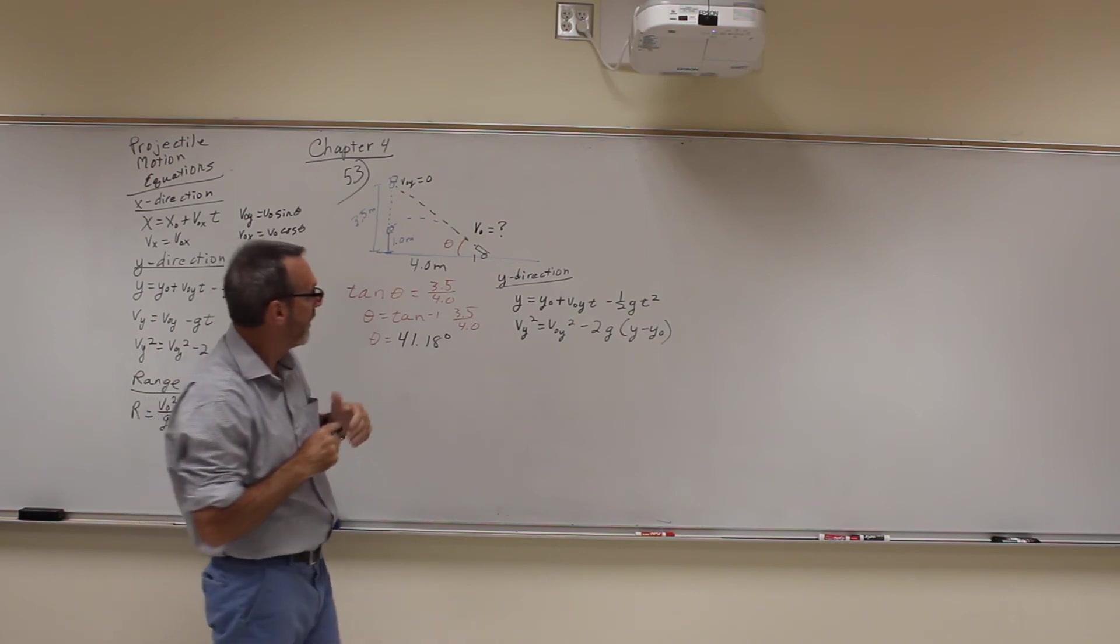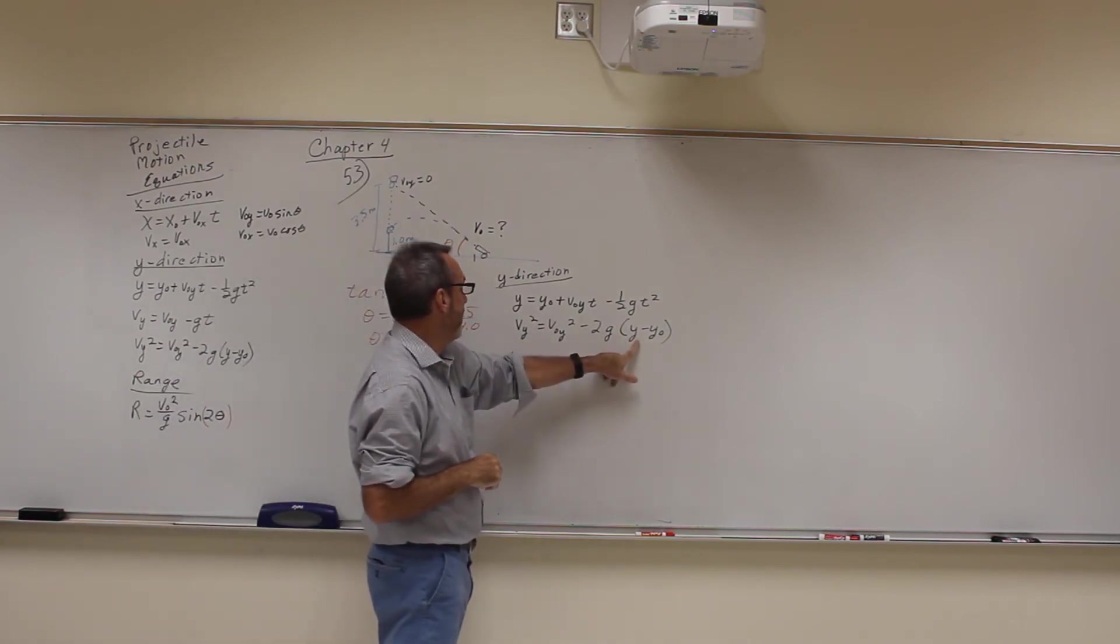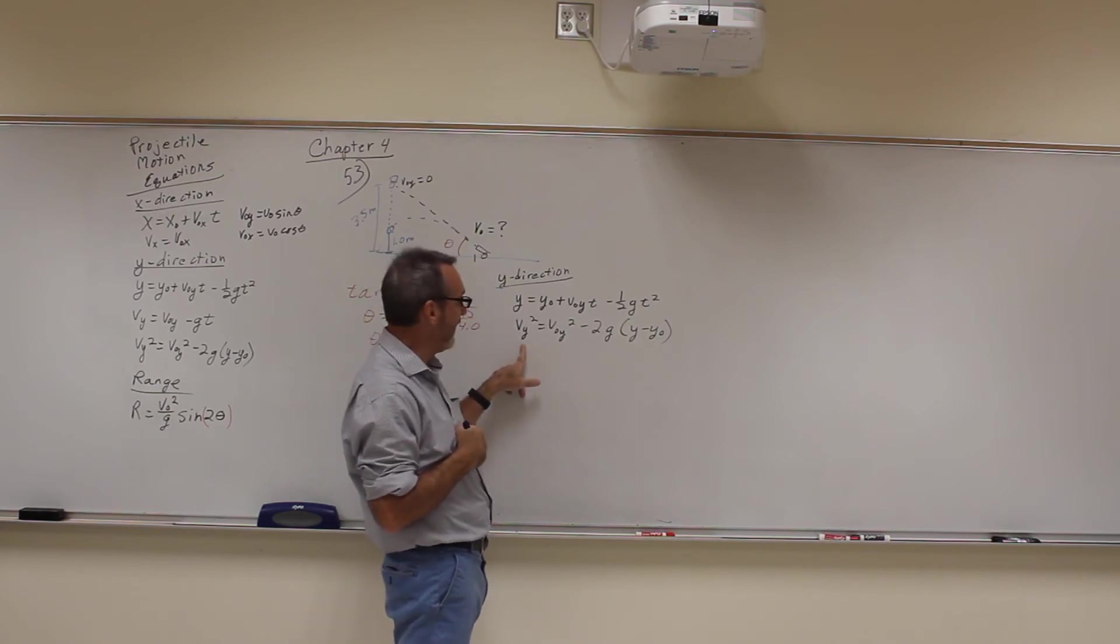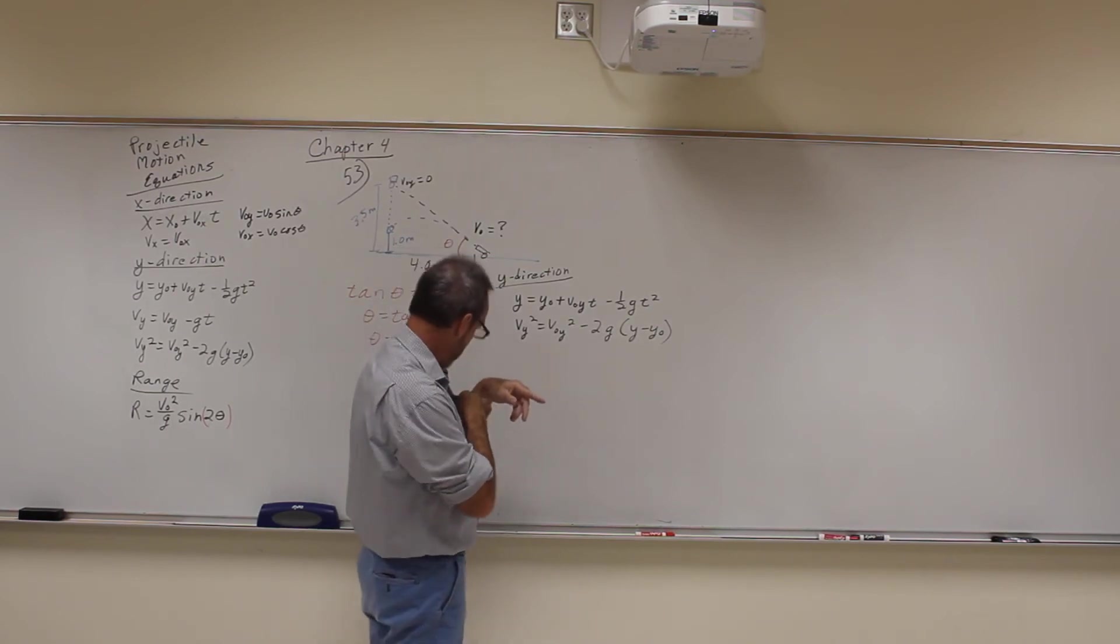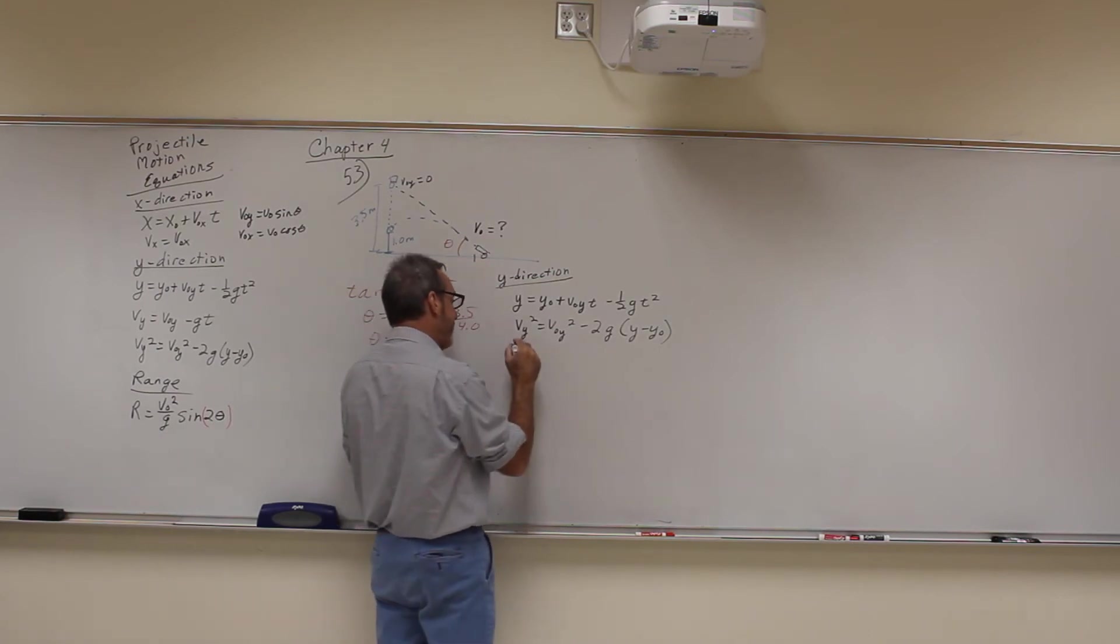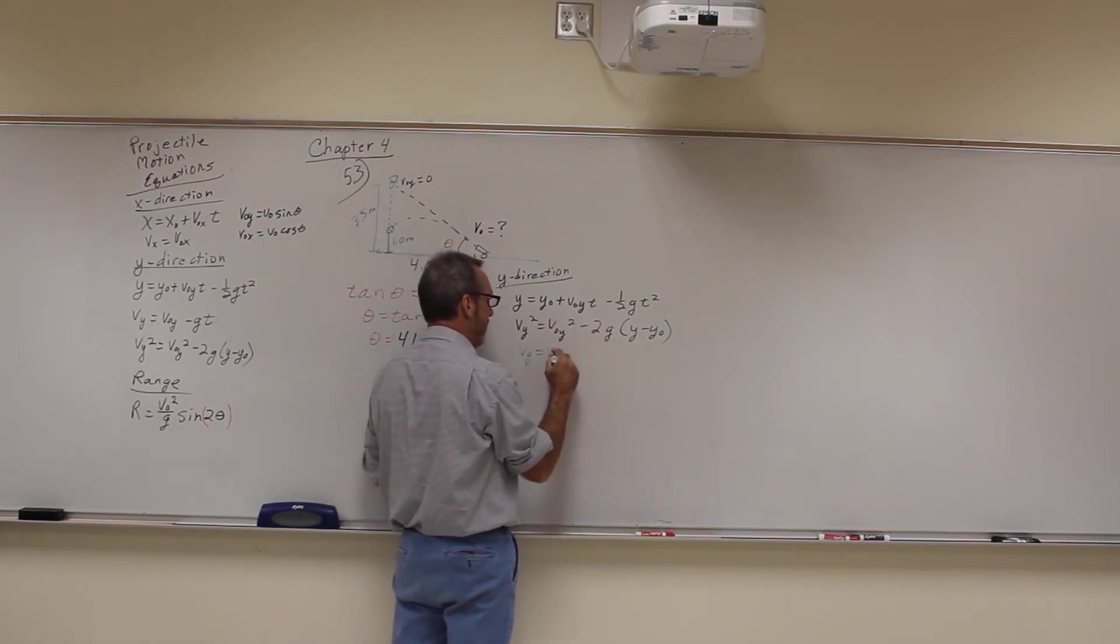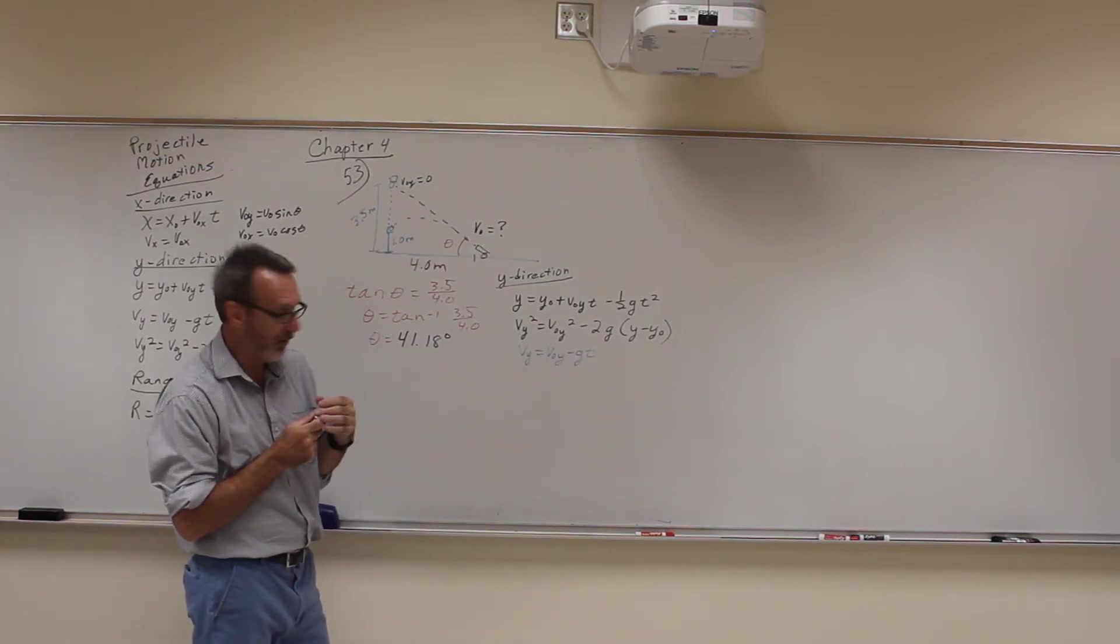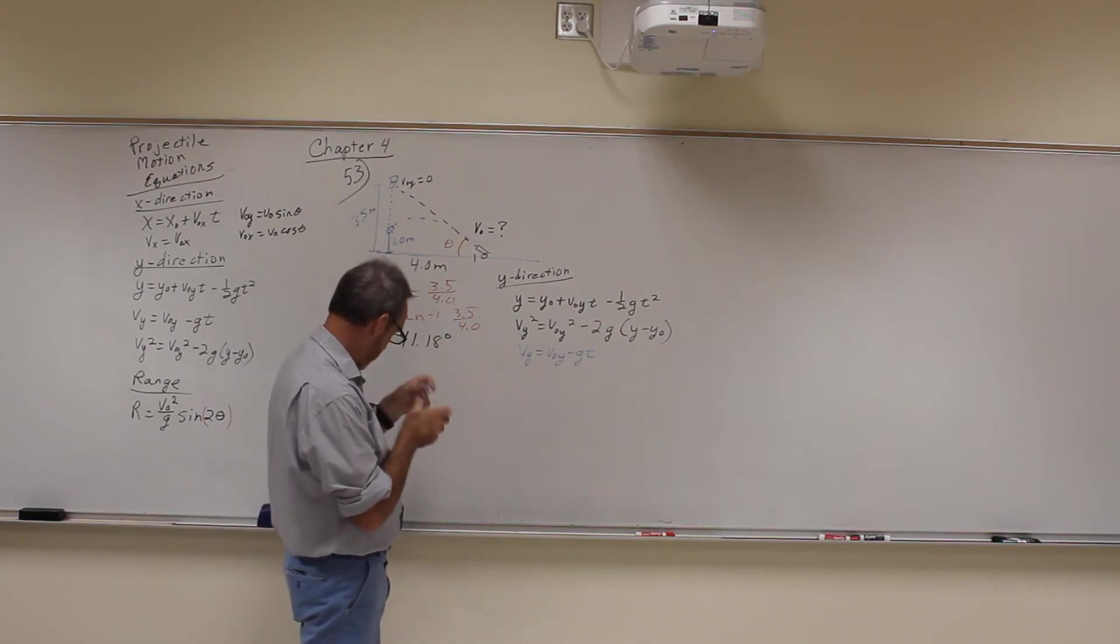We know the distance it falls. We know this. We could solve for this, we could solve for the final velocity here. Like how is that going to help us? Well, if we know that, then we can use this equation to solve for the time. And once we have the time, then we can solve for the rest of it. So what we're going to do is we're going to solve this one first.